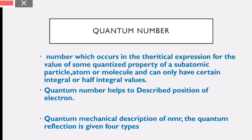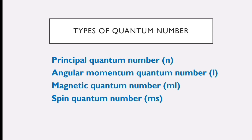What is the type of quantum number? It describes the position of the electron. There are four different types: the first type is the principal quantum number, the second is the angular momentum quantum number.